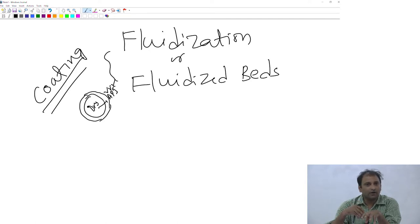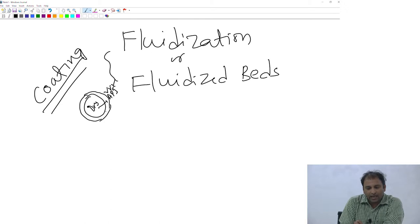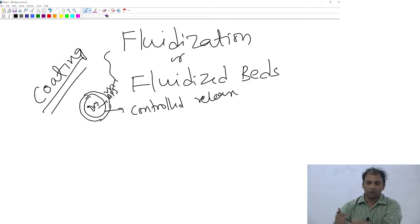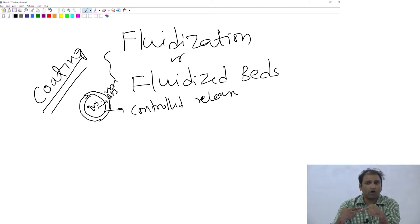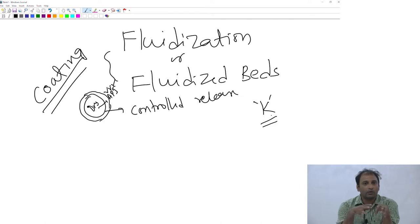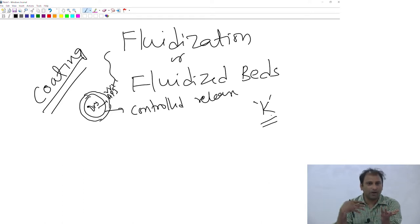So you can have a coating of an inert material, like a starch layer, for taste masking. It could also be used for controlled release — where somebody takes a pill and the drug releases into the body over an extended period of time. You can play with the coating material's permeability to control the amount of release over time. There are many applications of fluidization, including coating particles in the coating industry.